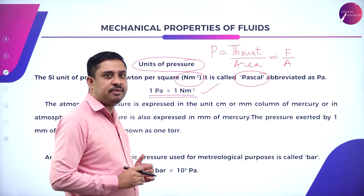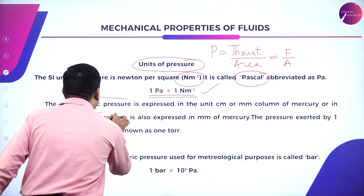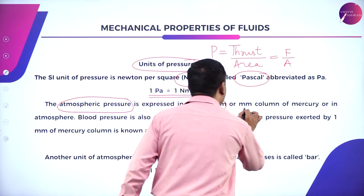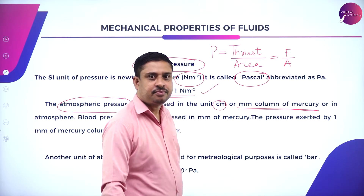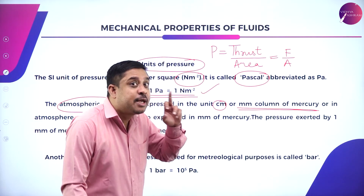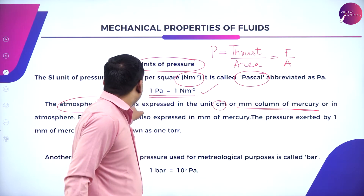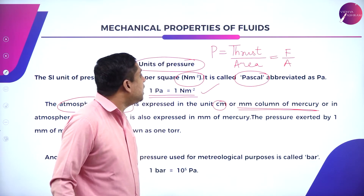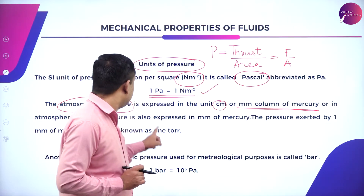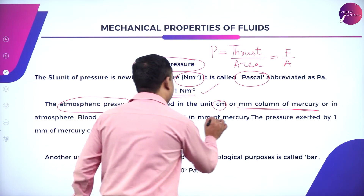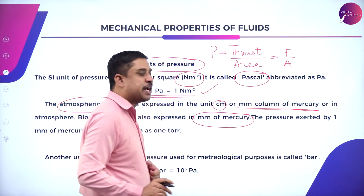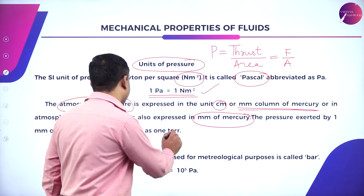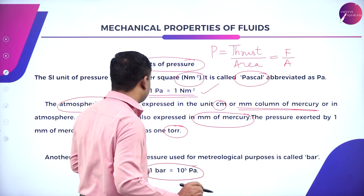Now, atmospheric pressure. Atmospheric pressure is expressed in centimeters or millimeters of mercury column. Even blood pressure is expressed in millimeters of mercury. The pressure exerted by 1 millimeter of mercury is called 1 torr. And 1 bar equals 10⁵ Pascal.